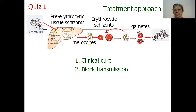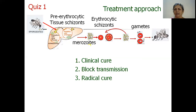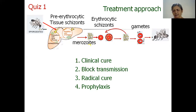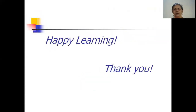Further quiz questions: To block transmission, which species needs an additional drug, and what is the target form of the parasite? What is radical cure, in which species is it required, and which drug is used for it? How do we give preventive treatment — what are the two possibilities considered, which is not used, and which is used to protect a traveller going into endemic areas? These are the key points from Part 1 of the malaria session. Happy learning — we will meet again with Part 2.